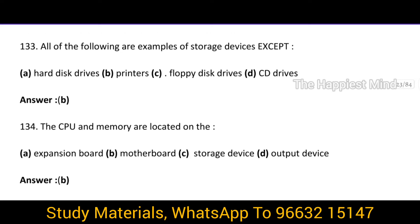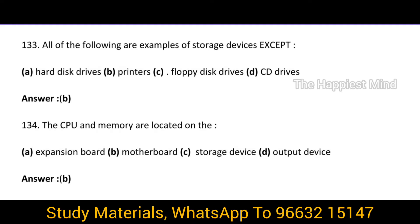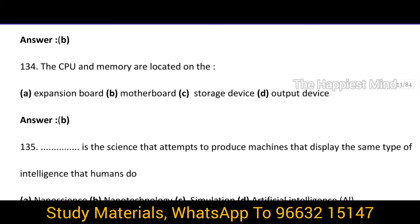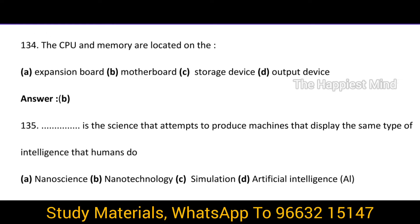Question 133: All of the following are examples of storage devices except — option B: Printers. Hard disk drives, floppy disk drives, and CD drives are all examples of storage devices, but a printer is not. Question 134: The CPU and memory are located on — option B: the motherboard.